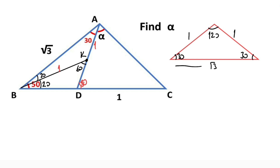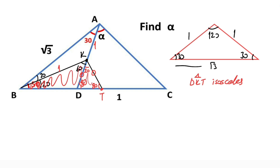If we create another isosceles triangle again, let's take 20 degrees here. Notice that we get an isosceles triangle, so these two sides must be equal. Let's call this point T. The DKT triangle is an isosceles triangle. This triangle is also an isosceles triangle — that is the TBK triangle.